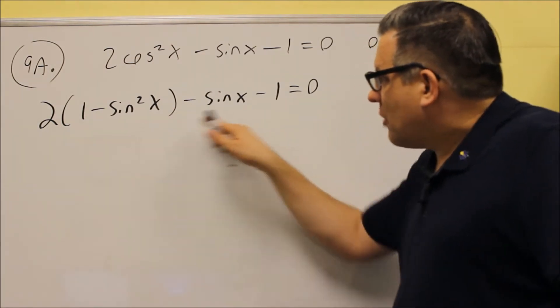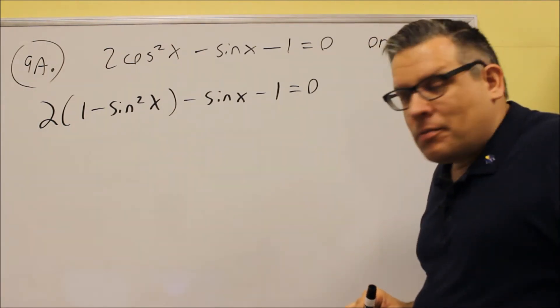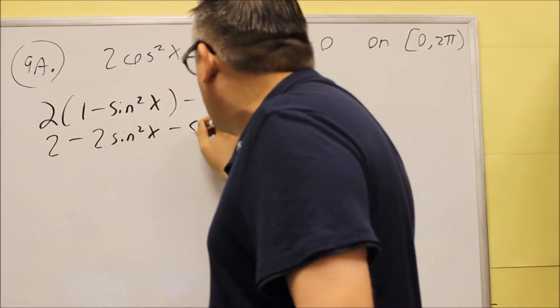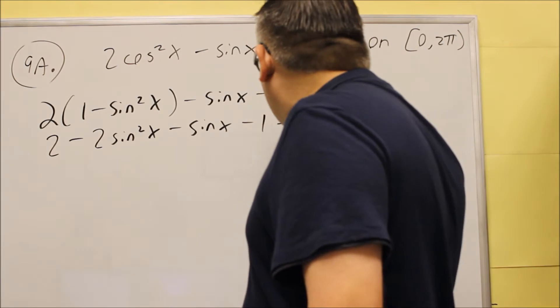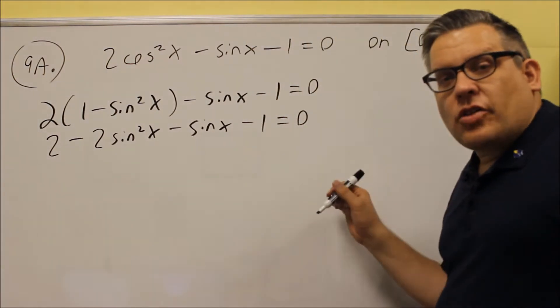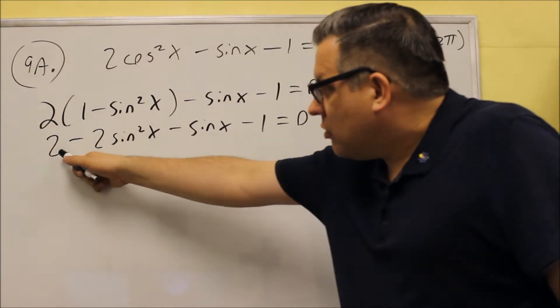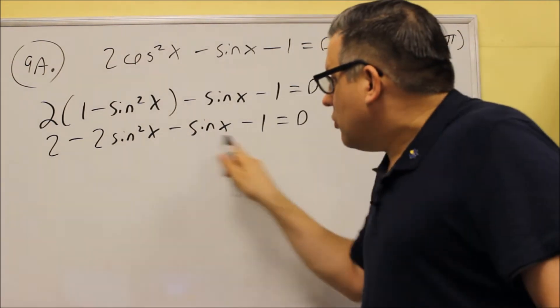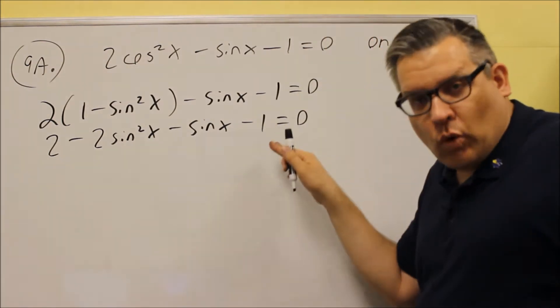So that's our first step is to put in the identity. Then we're going to multiply by 2. So we have 2 minus 2 sine squared x, and then we have the rest of this. And you want to combine like terms. Now here we have a 2, and we have a negative 1. So those two, 2 minus 1 is 1.